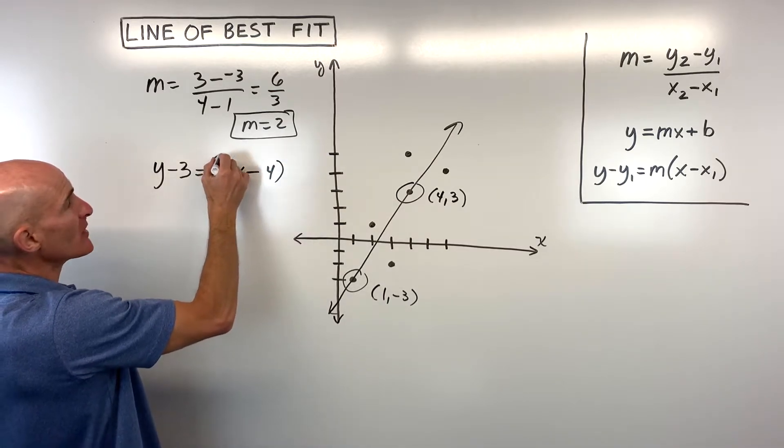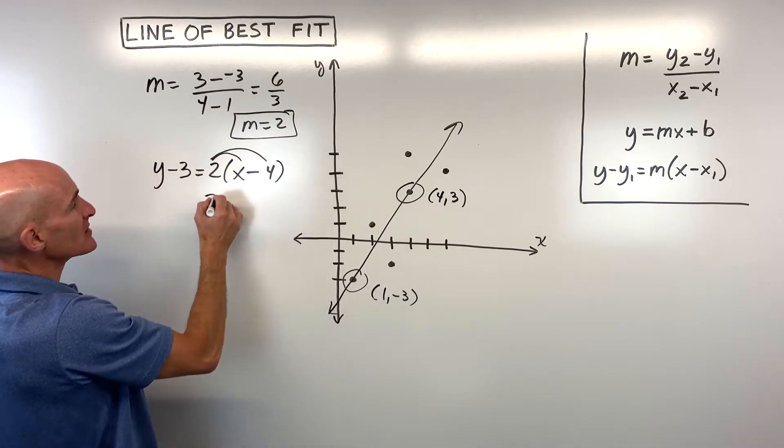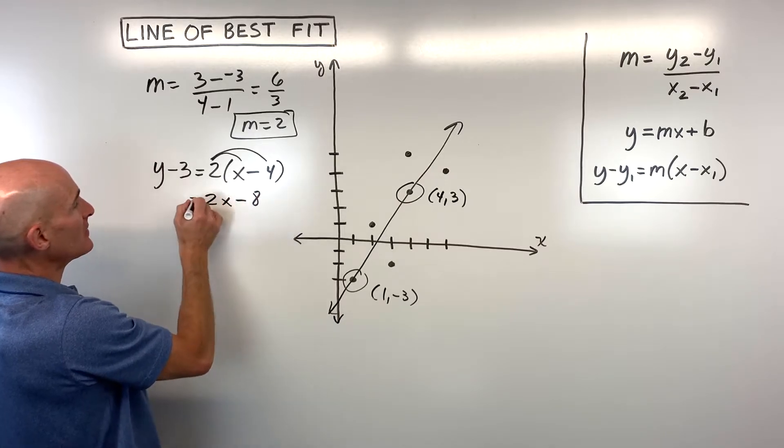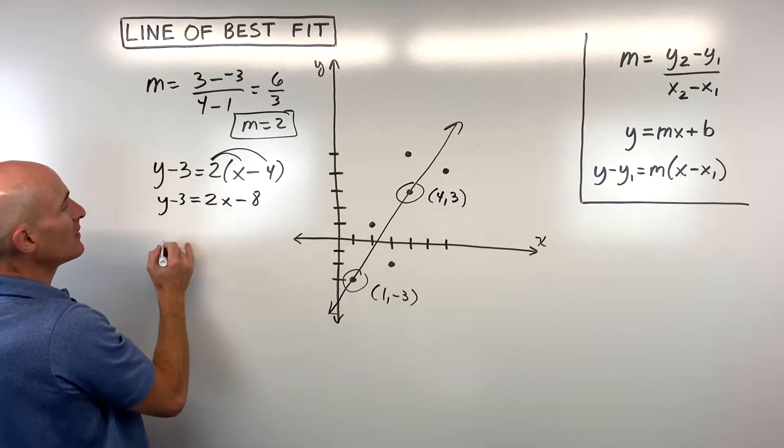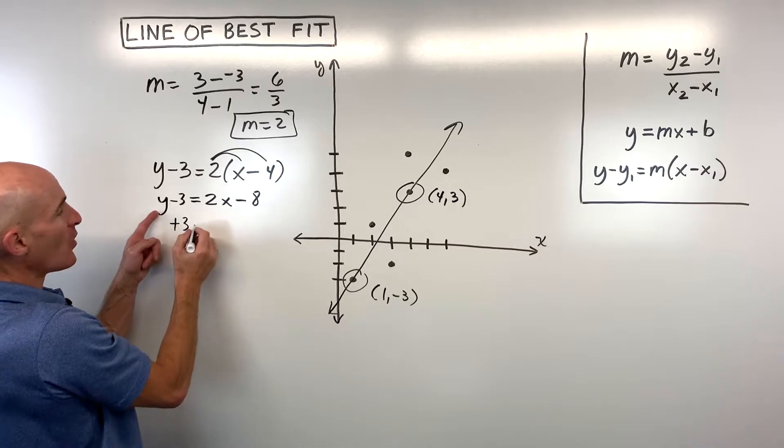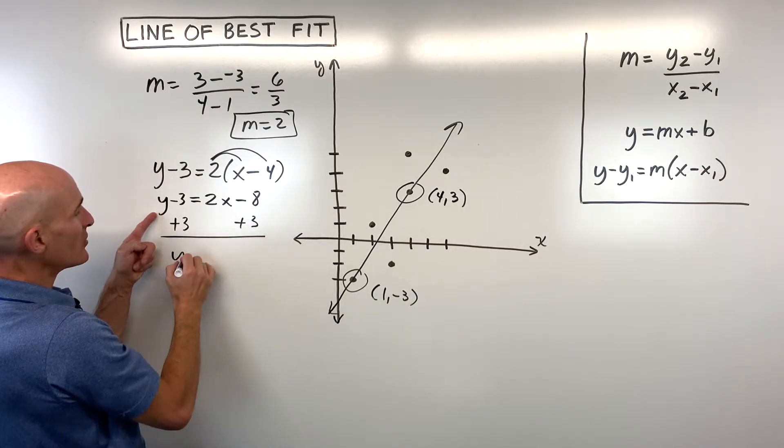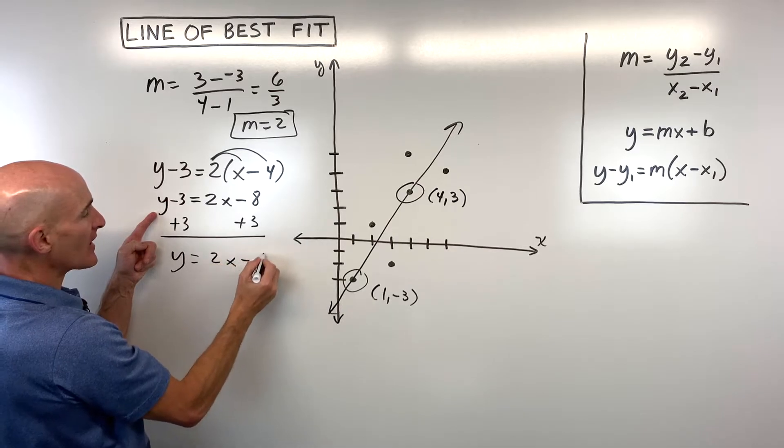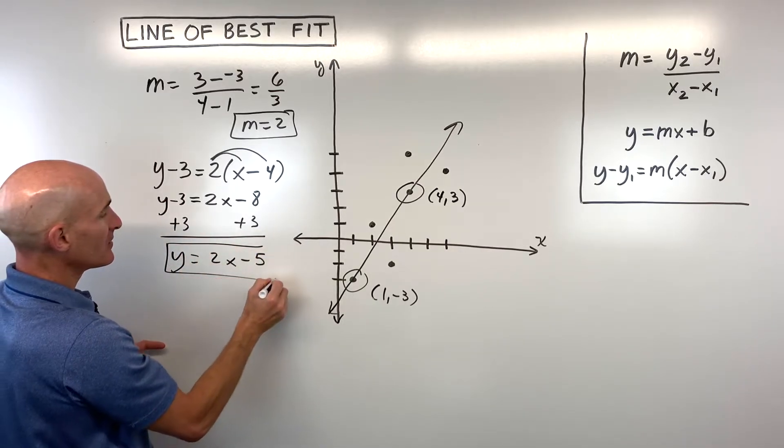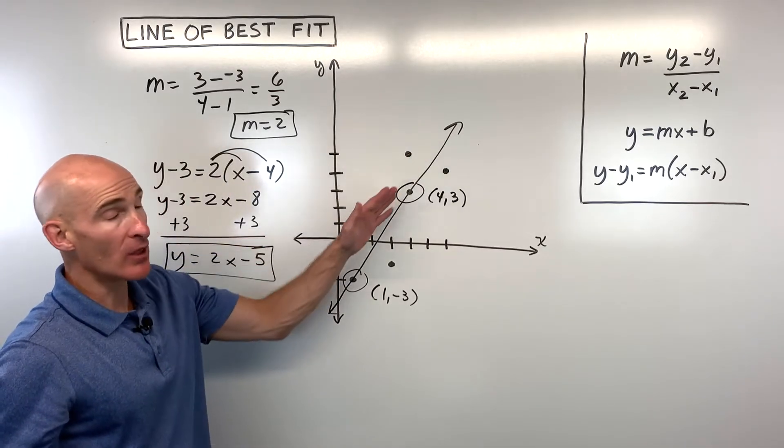Okay, let's go ahead and rewrite this a little bit. Let's distribute the two. So that's going to give us 2x minus 8. Let's add three to both sides to get y by itself. So now you can see y equals 2x minus 5. And that's the equation of our line of best fit.